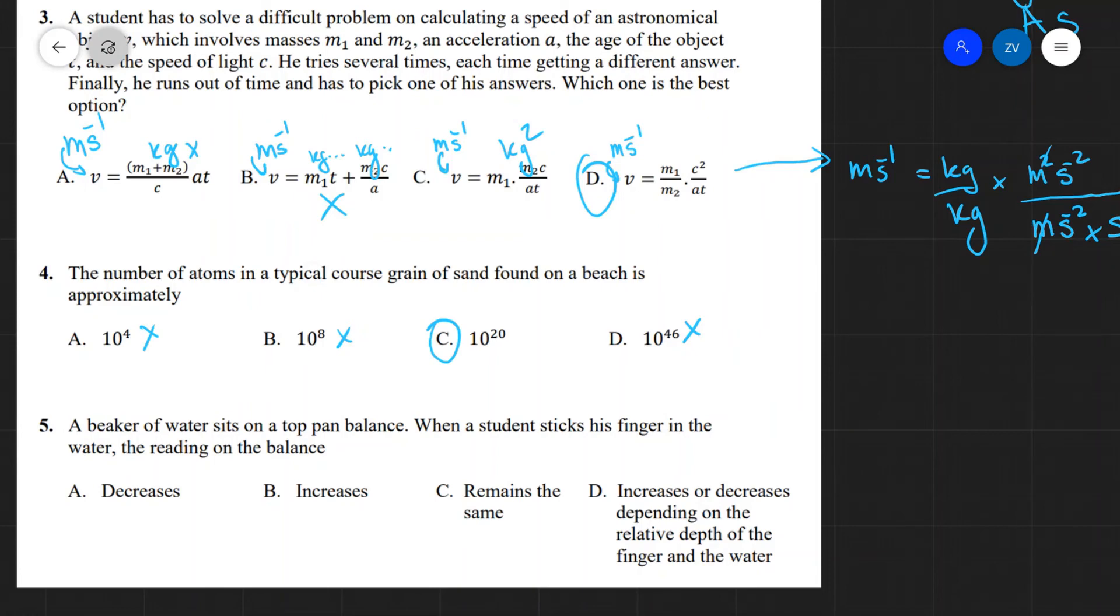Now a different number to remember that might become quite useful is that the number of electrons in a human body, for instance, is about 10 to the 28.